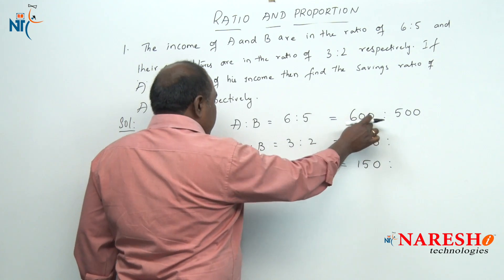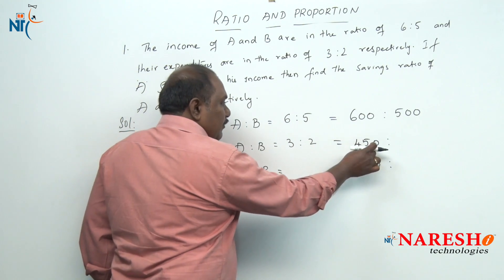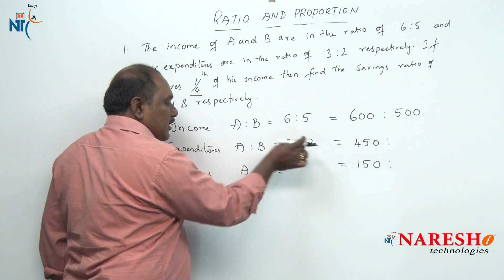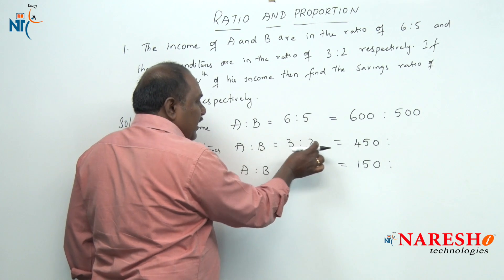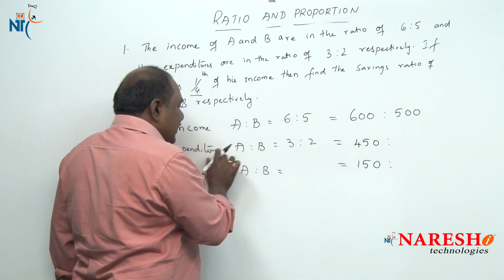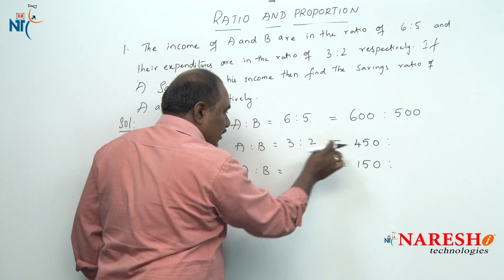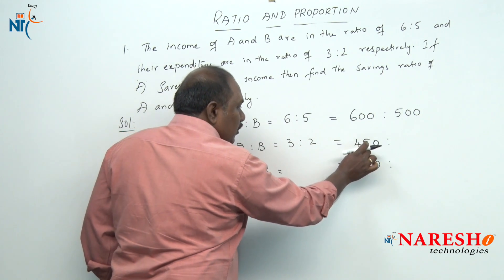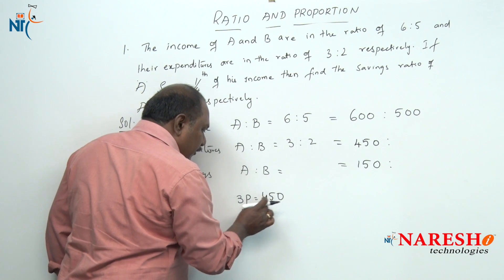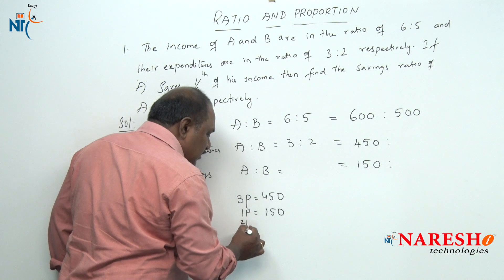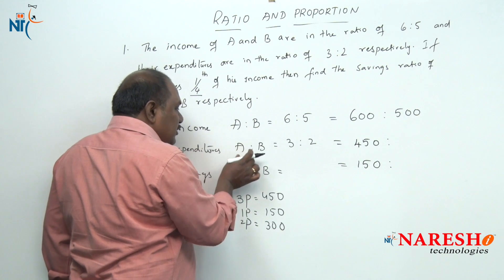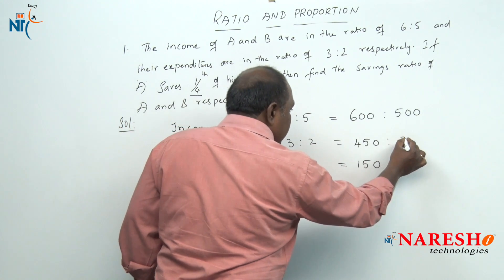The income of A is 600, his savings is 150, and his expenditure is 450. We know that the expenditure ratio of A and B is 3 is to 2 — if A spends 3 parts, B should spend 2 parts. The expenditure of A is 450, so if 3 parts equals 450, then 1 part equals 150 and 2 parts equals 300. So the expenditure of B is 300.